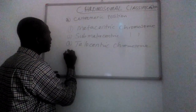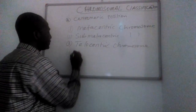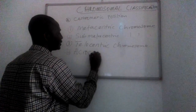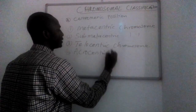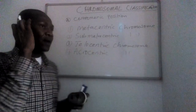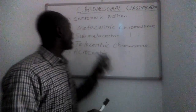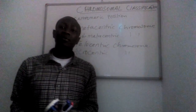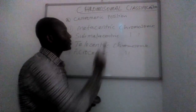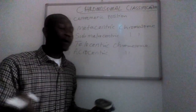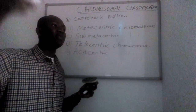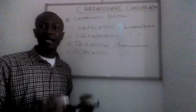Now let's look at the fourth classification — the acrocentric chromosomes. Acrocentric chromosomes and sub-metacentric chromosomes are a little bit confusing, but they are different. In sub-metacentric chromosomes one of the arms is longer, but it is not that much longer than the short arm.